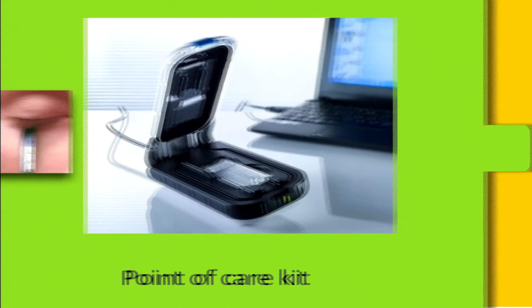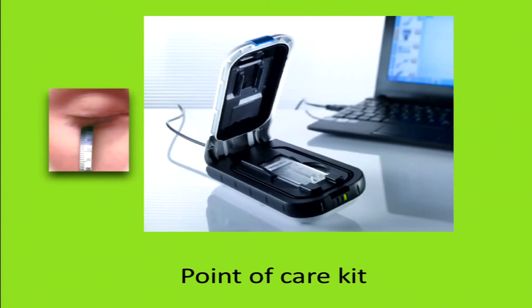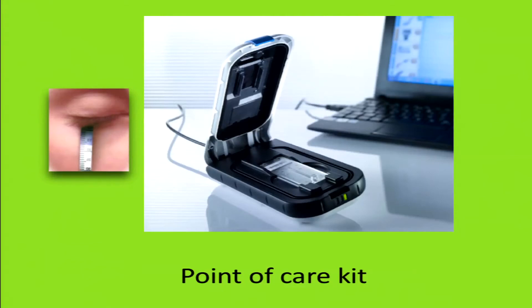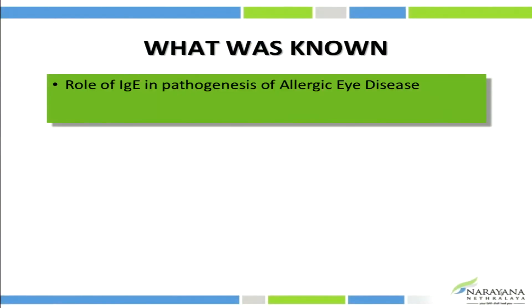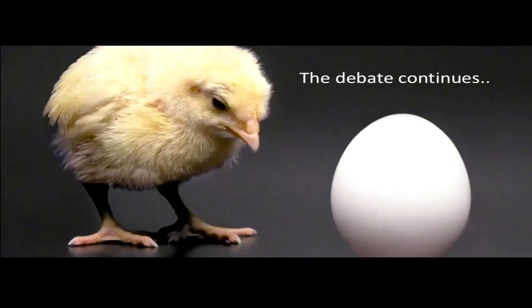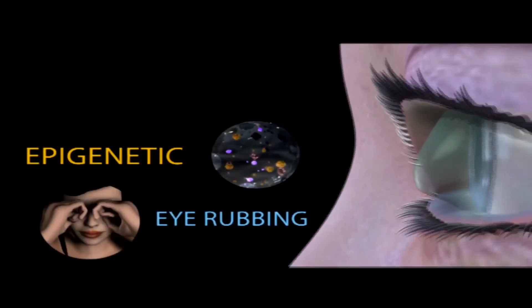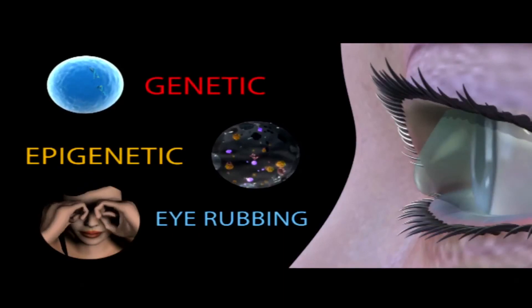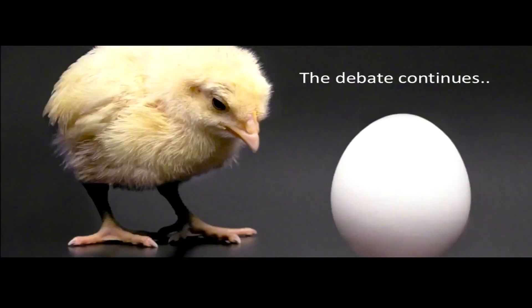Looking to the future, we hope to get a point-of-care kit which will enable us to measure IgE levels at the bedside. What was previously known was the role of IgE in the pathogenesis of allergic eye disease, but what our paper adds is the identification of IgE in the tears and its role in eye rubbing, as well as the management of systemic allergens by an immunologist. As for why all eye rubbers do not get keratoconus — this is because epigenetic factors like eye rubbing and genetic factors together play a role. The debate continues, but now we know that systemic factors play a role in eye rubbing. Thank you.